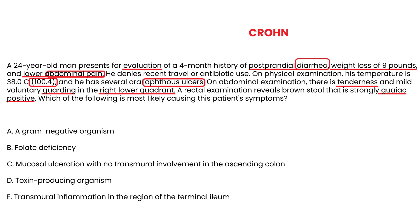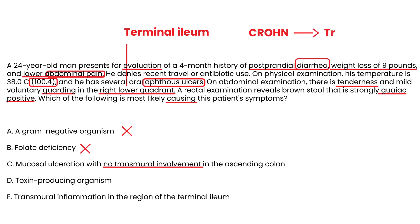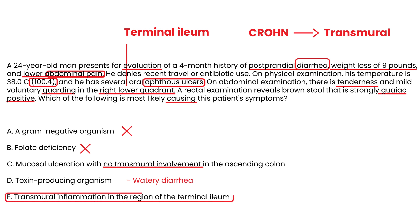The right lower quadrant guarding points to the terminal ileum, which is affected in Crohn's disease in almost half of all cases. Working through the answer choices: gram-negative organisms have nothing to do with Crohn's; folate deficiency does not cause Crohn's; mucosal ulceration with no transmural involvement is incorrect because Crohn's involves the full thickness of the bowel wall; a toxin-producing organism would likely present with just watery diarrhea. By elimination, the correct answer involves transmural inflammation affecting the terminal ileum — consistent with Crohn's disease.